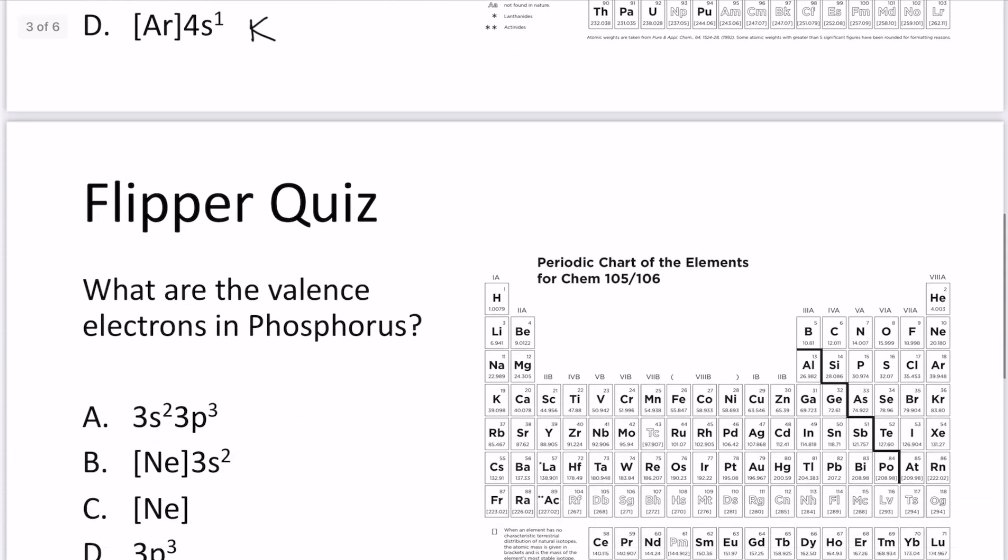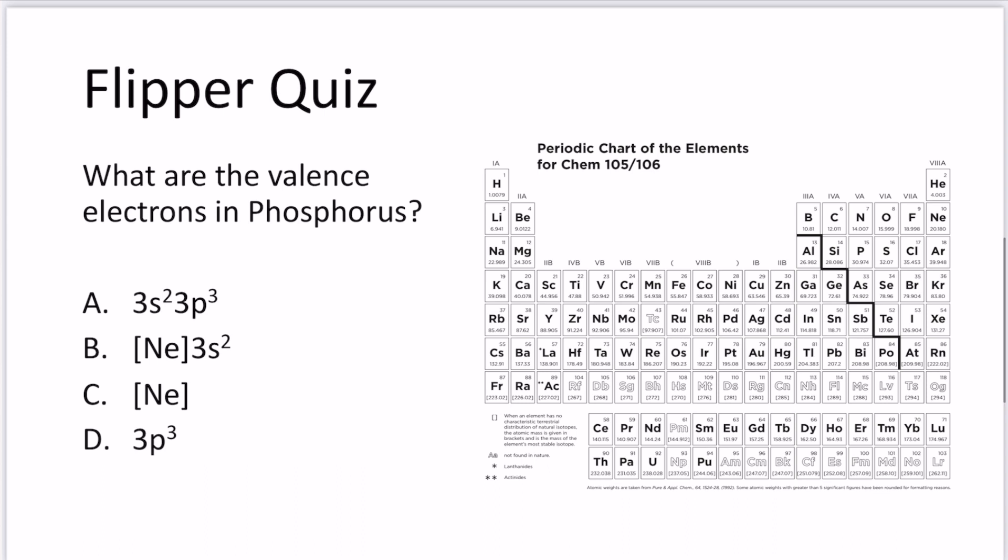Okay, next one. What are the valence electrons in phosphorus? So phosphorus is located here on the periodic table, it's number 15.